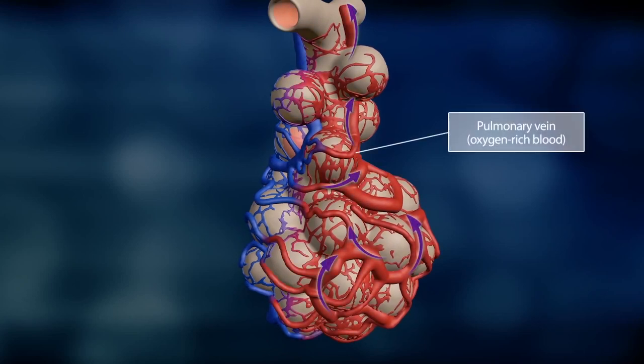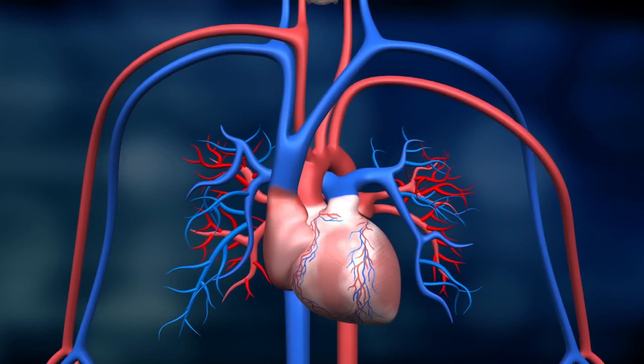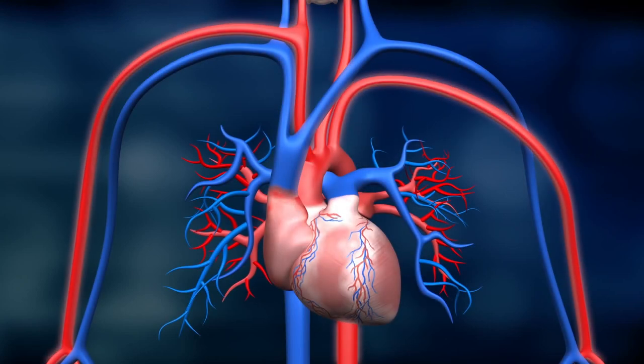Meanwhile, the oxygen rich blood flows back to the heart through the pulmonary veins. The heart then pumps the blood to the rest of the body through the systemic circuit, supplying all organs with oxygen.